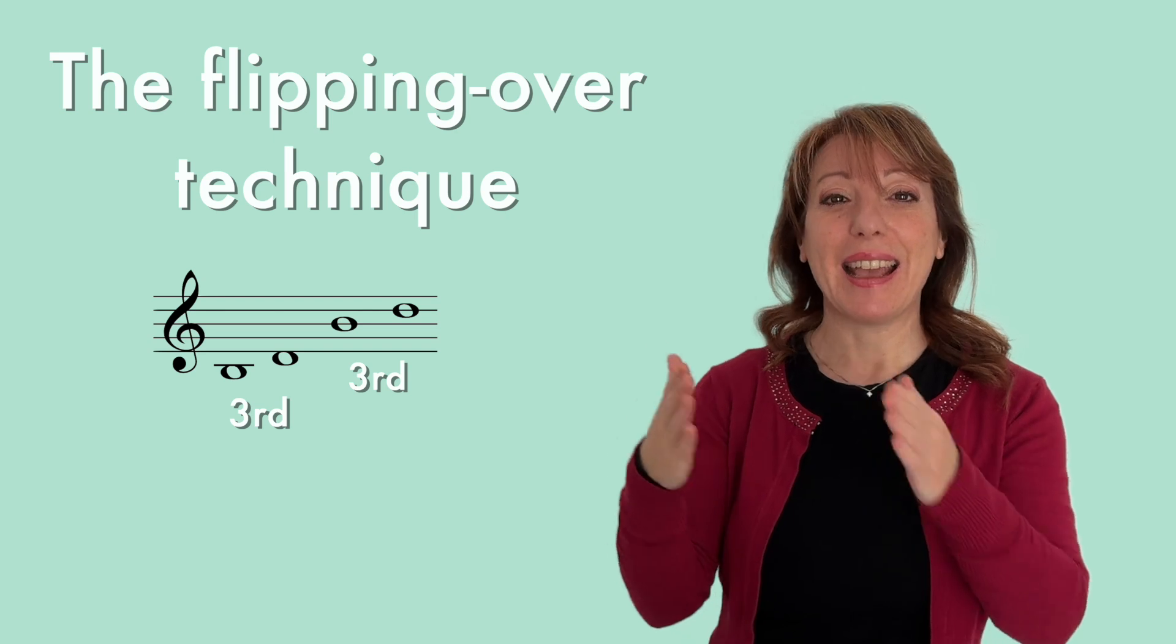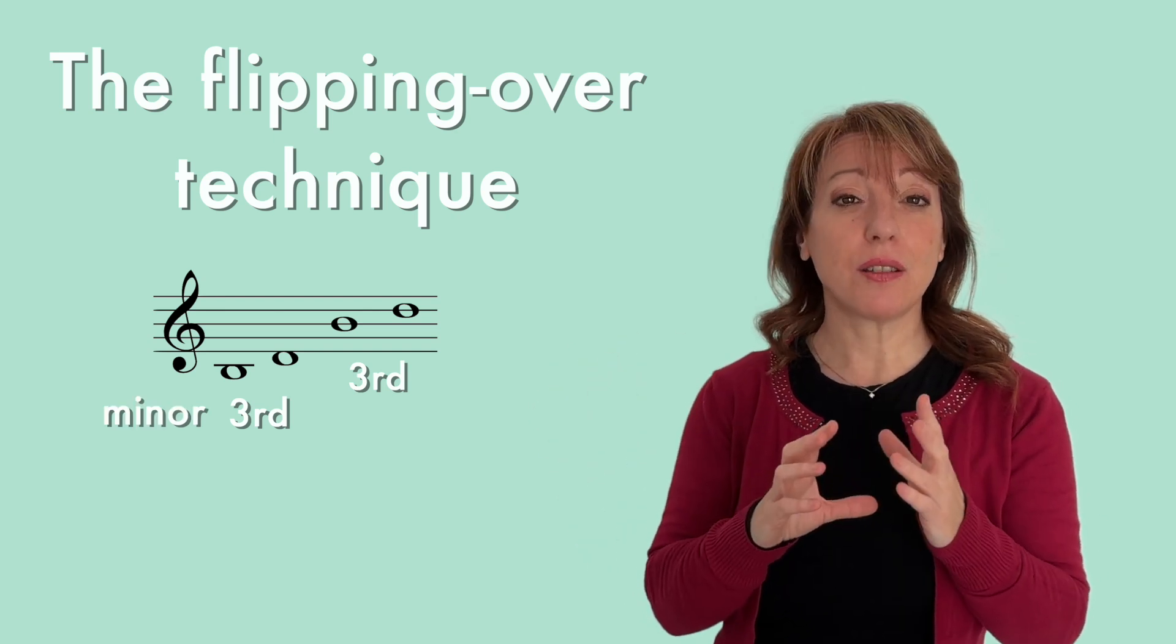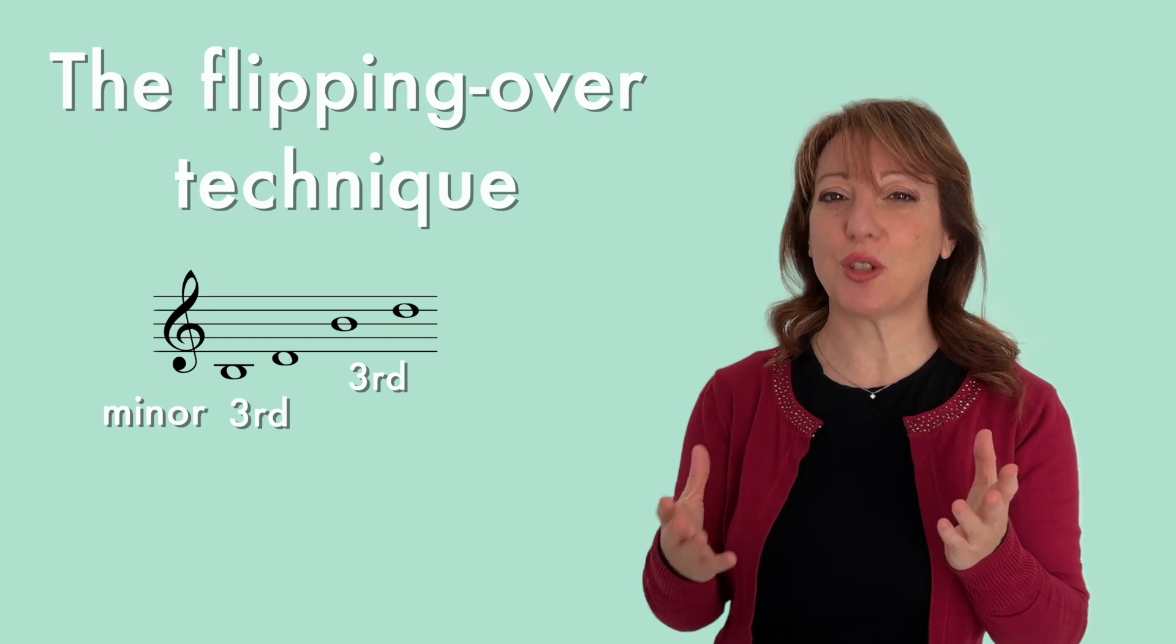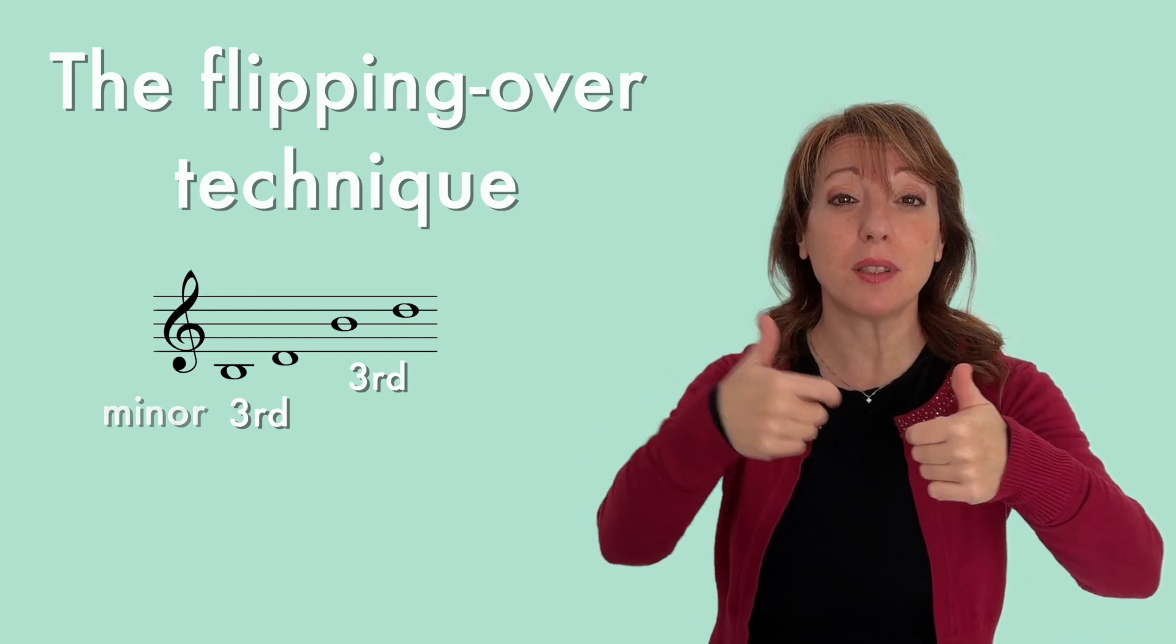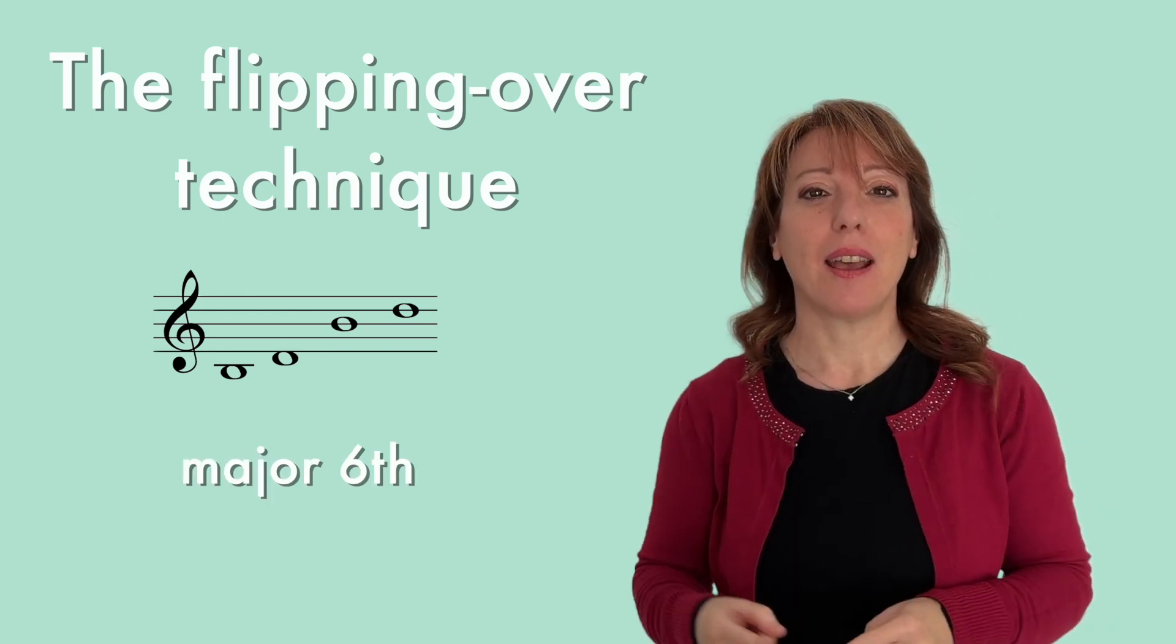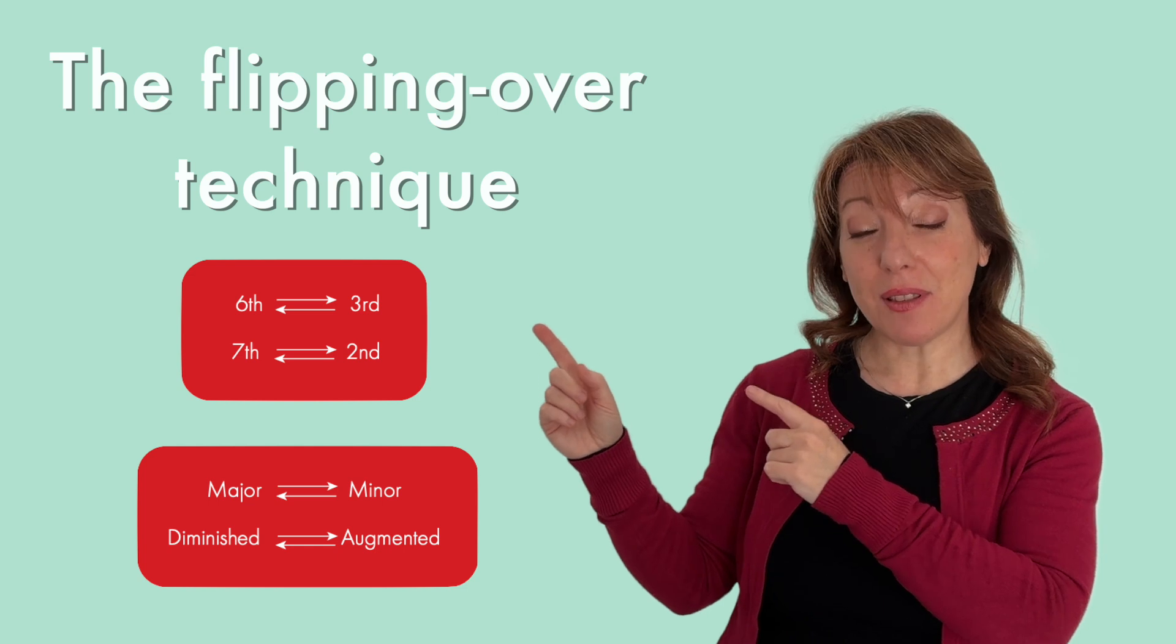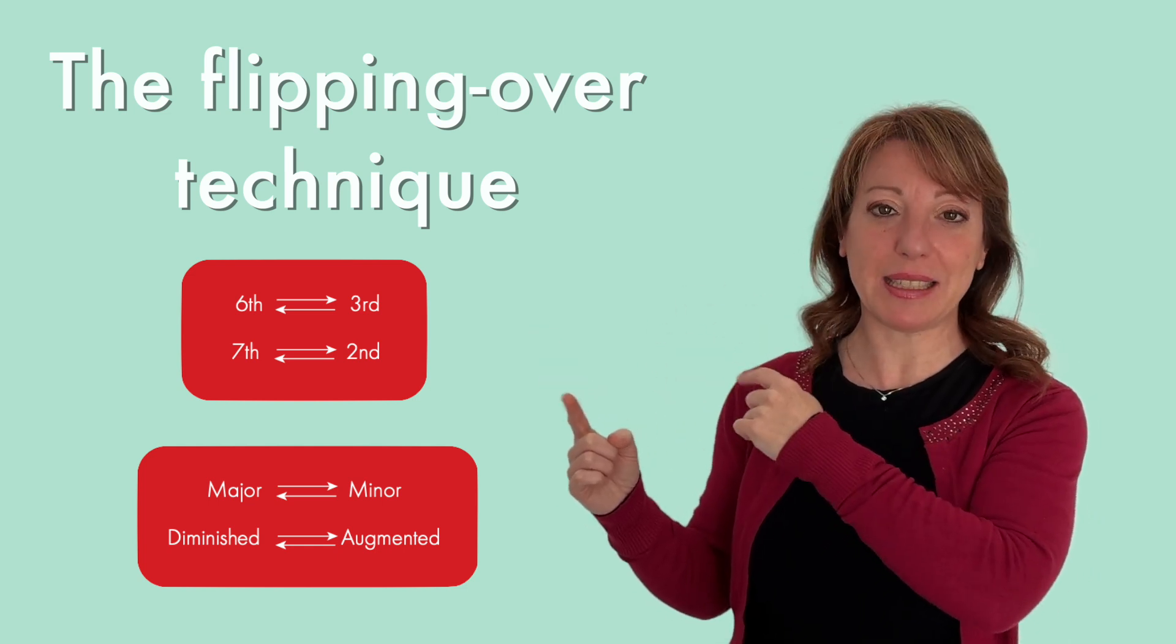Now, what type of third is it? B-D is a minor third because it has a tone and a half only instead of two. A minor third flipped over again becomes the opposite. A major sixth. Because a sixth becomes a third, a seventh becomes a second, a major becomes minor and diminished becomes augmented.